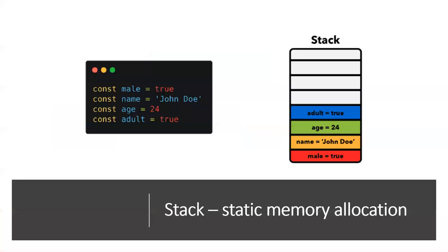The JavaScript engine uses two types of storage: stack and heap. The stack is a static memory allocation — all primitive types are stored in the stack, for example numbers, booleans, undefined, and nulls. At compile time we already know the size of these primitive type values, so those are stored in the stack.